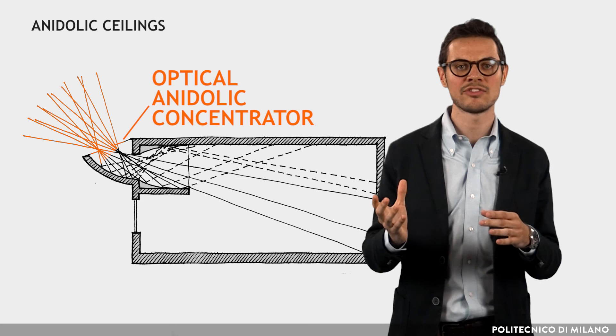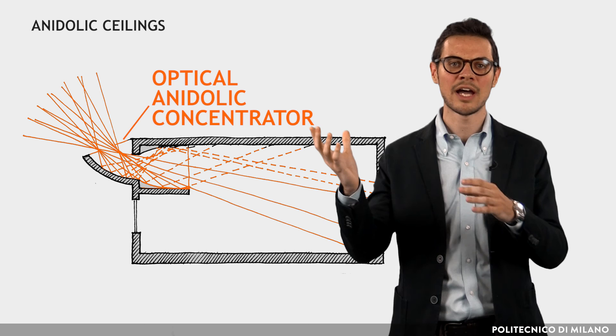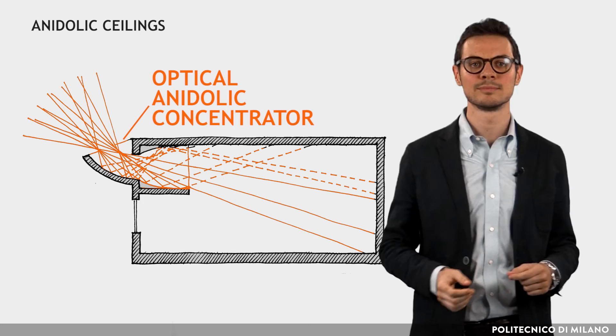Outside the building, an optical anidolic concentrator captures and focuses the scattered light coming from the highest part of the sky. A light pipe, arranged in the ceiling, carries the light to the back of the room.